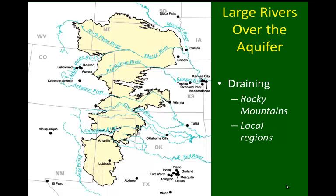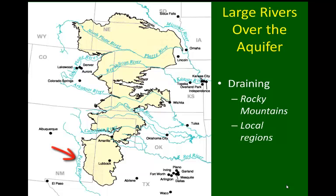There are a number of large rivers that flow over the aquifer. We talked about the North Platte and the South Platte, moving through Wyoming, Colorado, and Nebraska. We also see the Arkansas River coming out of its headwaters in Colorado and moving east through southern Kansas. And then the Pecos River and the Red River, moving through headwaters in New Mexico and Texas respectively, and heading east. In general, the northern rivers are draining the Rocky Mountains, while all of these rivers also have the opportunity to drain water from local parts of the watershed.